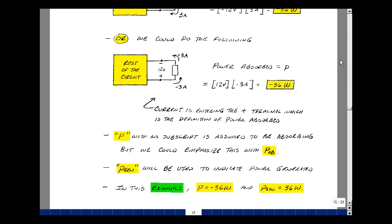In the course, we're going to use a lowercase p with no subscript to indicate power absorbed. Sometimes to emphasize that I am absorbing power, I may put a subscript of AB. When we talk about power generated, I'll use a subscript of GEN. In this last example, we had power absorbed, lowercase p, equal to minus 36 watts. But you could also say that this is power generated of 36 watts by changing the sign and then changing the subscript. And these are some of the definitions of electric power and the passive sign convention.